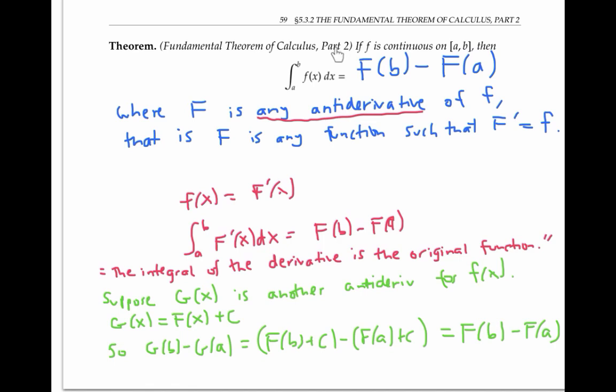Part two of the fundamental theorem of calculus is super useful because it allows us to compute integrals simply by finding antiderivatives and evaluating them. Finding antiderivatives tends to be really easy. Computing integrals using the Riemann sum definition is really hard.